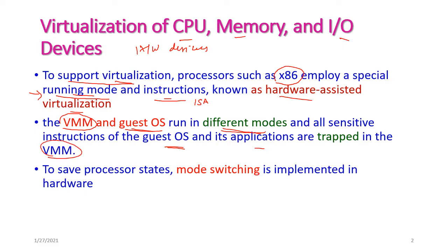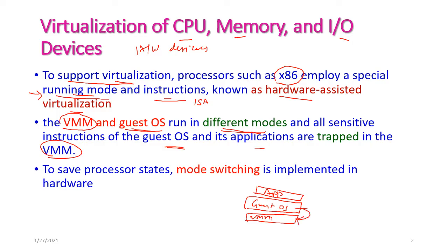As seen in the last video, the VMM is at the base, with the guest OS on top. If any special instructions are executed by an application, those instructions will be trapped by the virtual machine monitor. Non-sensitive, unprivileged instructions can be directly executed on the hardware itself.